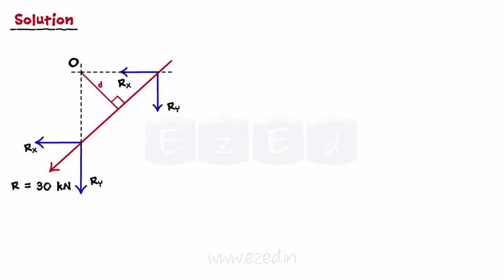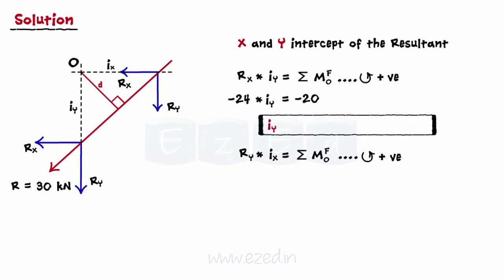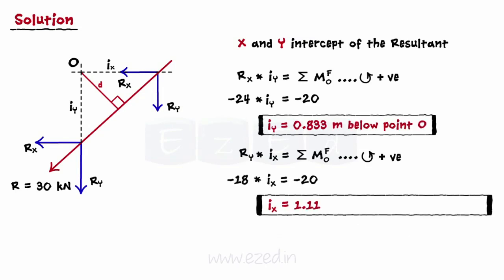Next, we have to find the x and y-intercept of the resultant. The y-coordinate is calculated using the x-component of the resultant, and the x-coordinate is calculated using the y-component of the resultant. Hence, we find the y-intercept of the resultant to be 0.833 meters below point O, and the x-intercept to be 1.11 meters to the right of point O.